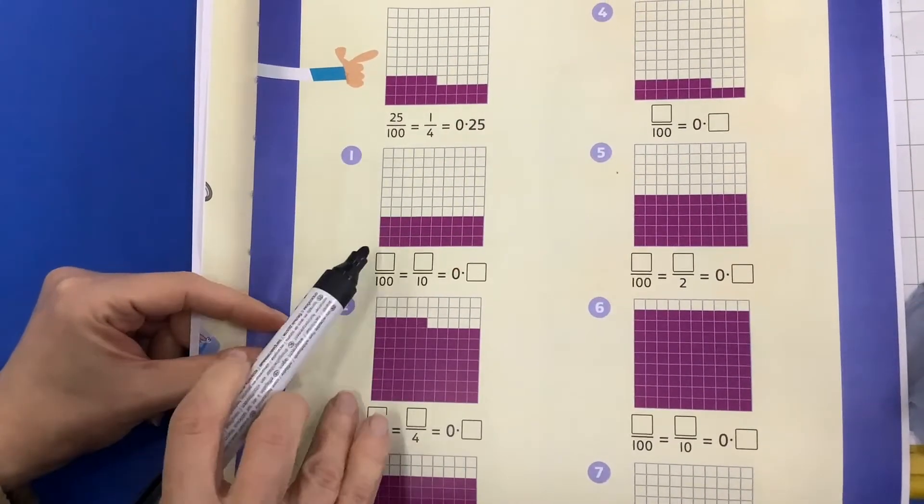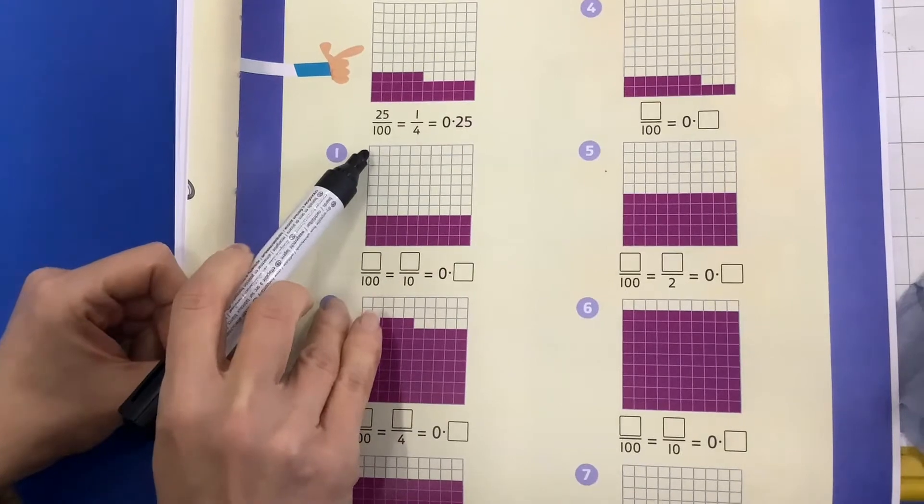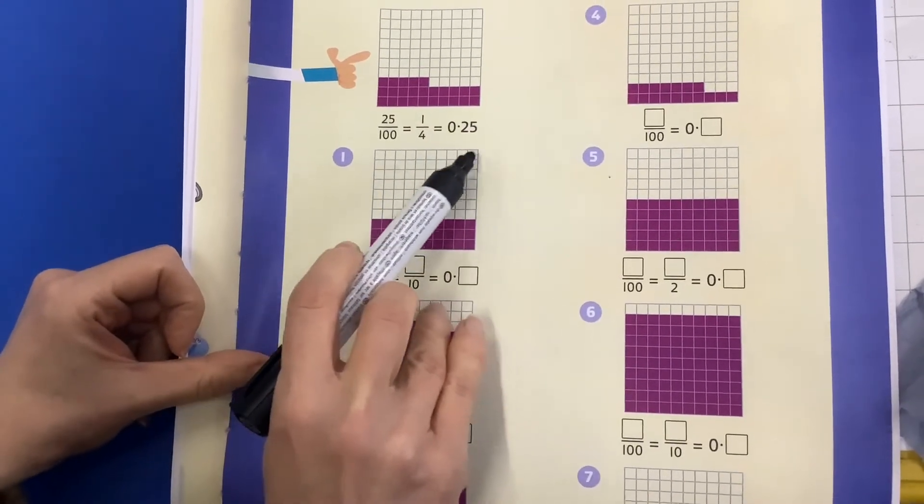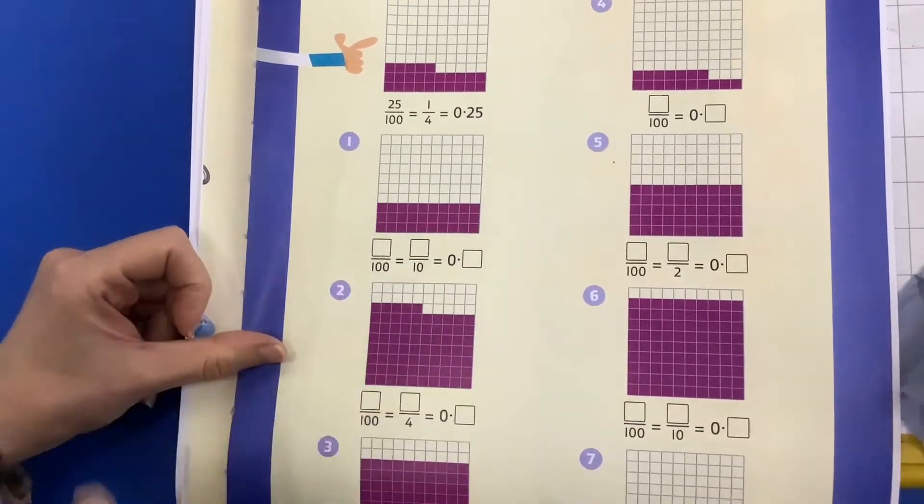Here we've got 100, and I know there's 100 because I've got 1, 2, 3, 4, 5, 6, 7, 8, 9, 10 along the top and 1, 2, 3, 4, 5, 6, 7, 8, 9, 10 down the side. So it's a 10 by 10 square, it's 100.